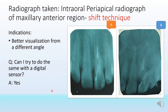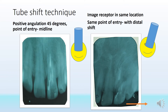The indication for this technique is to achieve better visualization from a different angle. These are taken with normal periapical films, and yes, this can also be done with a digital sensor. The tube shift technique involves taking two radiographs of the same region one after the other, placing the film or sensor in the same location, but shifting the point of entry of the X-ray tube — more distally in the second image, or mesially depending on what we want to see.